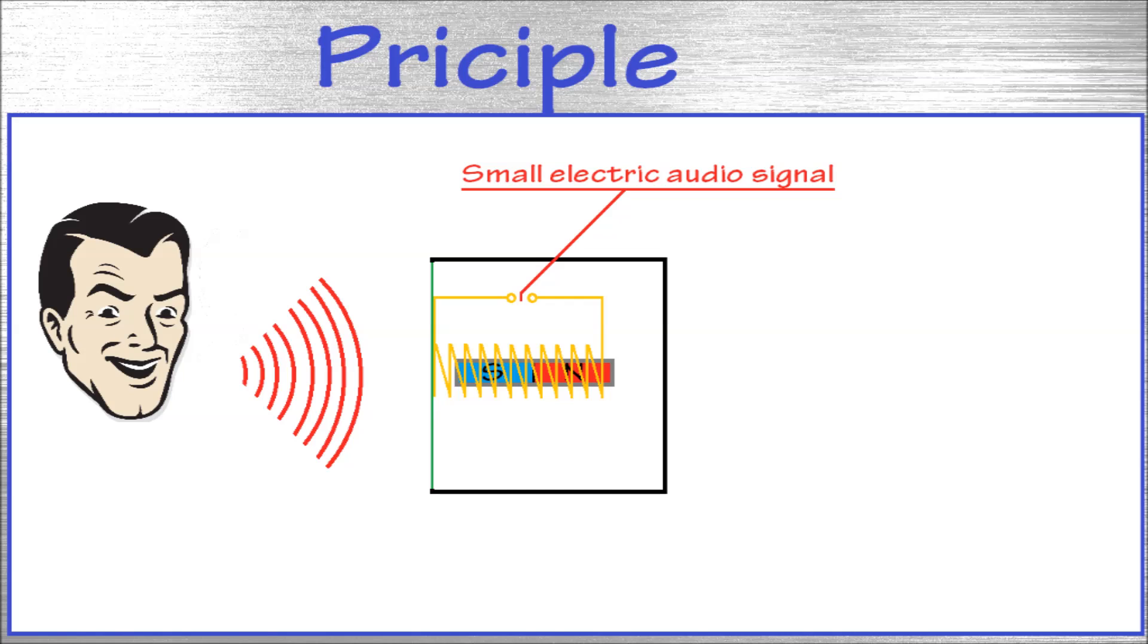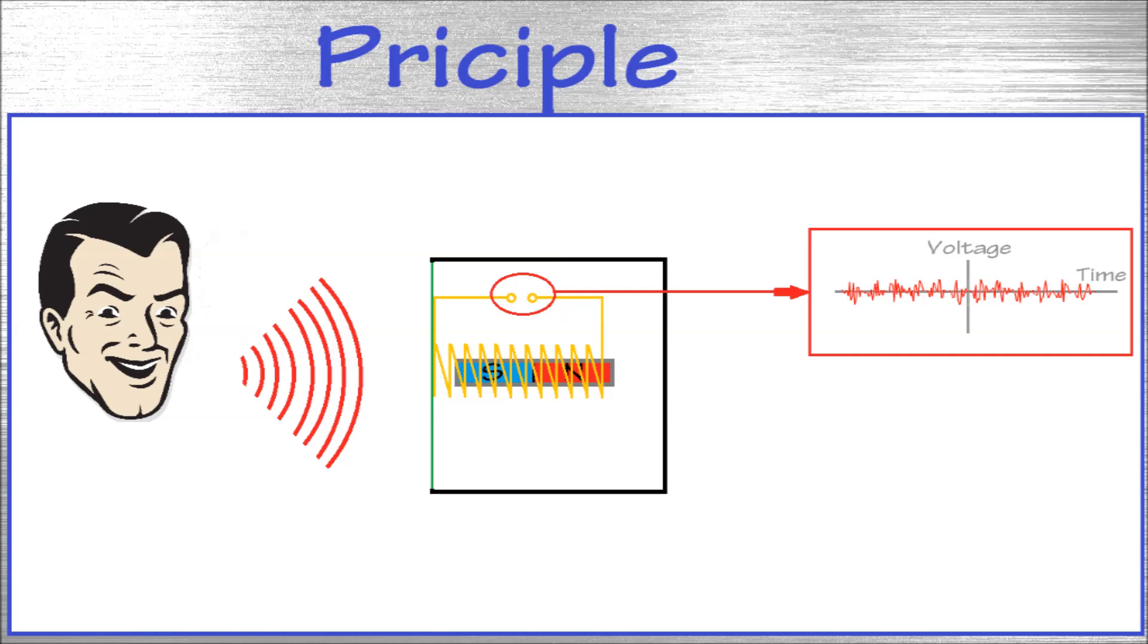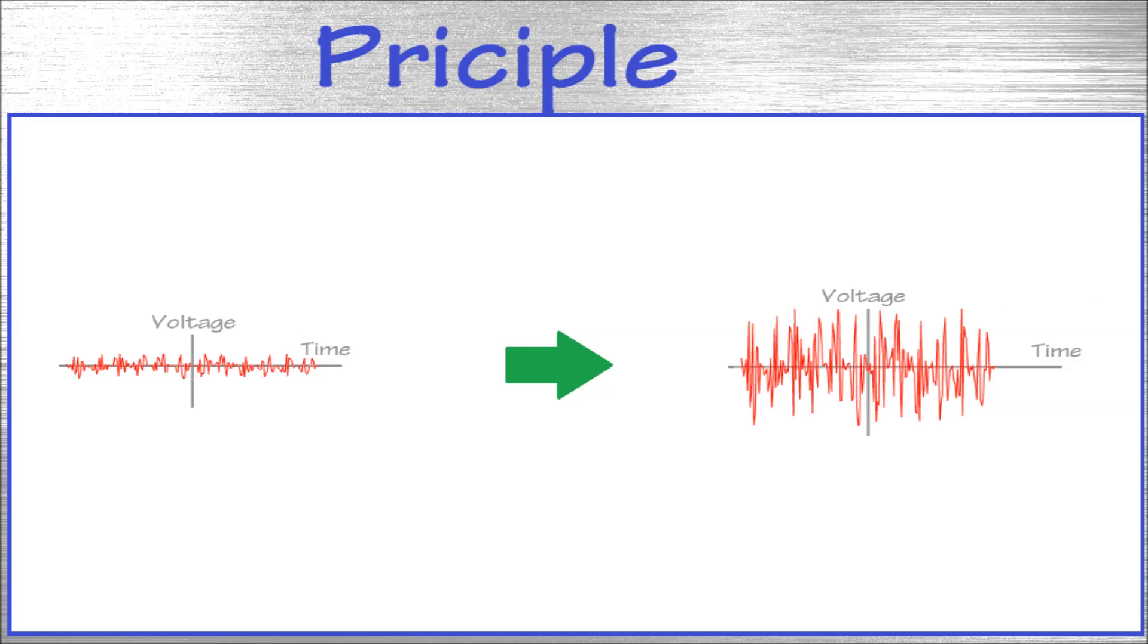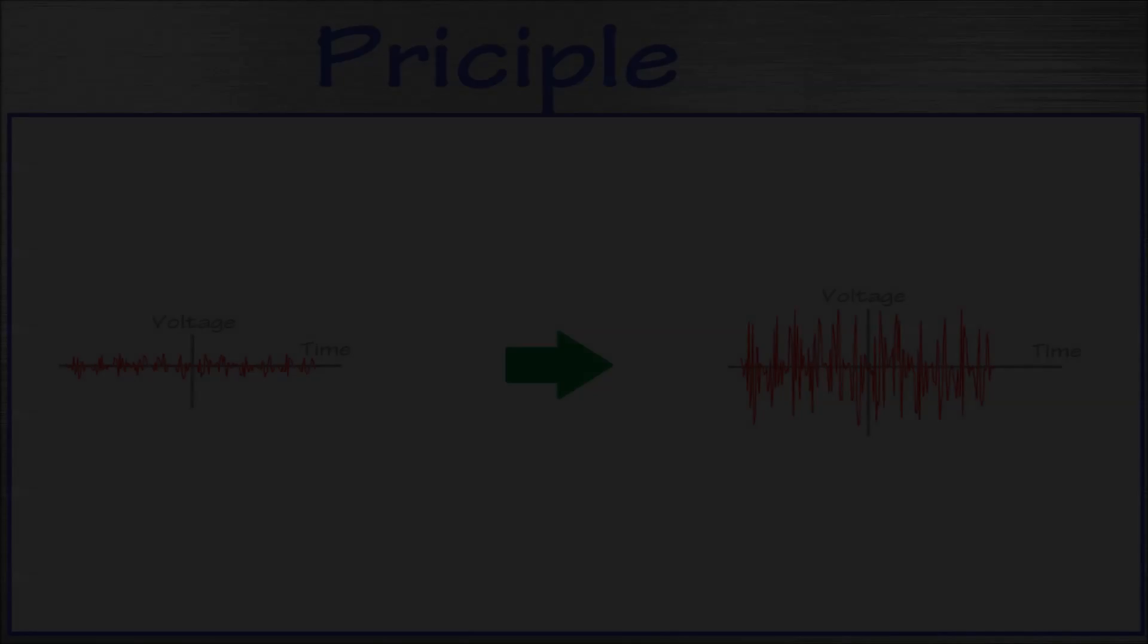This small electric audio signal represents the sound waves. It's a small signal, but it can be amplified to much greater voltages to be played in a loudspeaker or to be recorded. Now you know how a microphone converts audio into an electric signal.